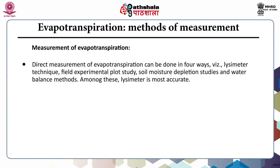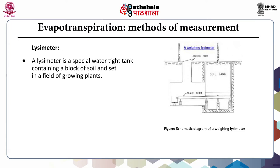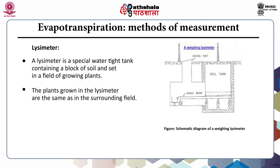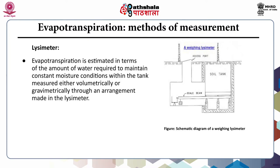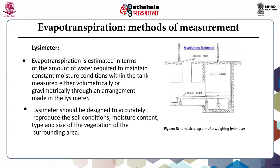The direct measurement of evapotranspiration can be done in four ways: lysimeter technique, field experimental plot study, soil moisture depletion studies, and water balance study. Among these, the lysimeter is the most accurate one. A lysimeter is a special watertight tank containing a block of soil and set in a field of growing plants. The plants grown in the lysimeter are the same as in the surrounding field. Evapotranspiration is estimated in terms of the amount of water required to maintain constant moisture conditions within the tank, measured either volumetrically or gravimetrically. Lysimeters should be designed to accurately reproduce the soil conditions, moisture content, type and size of the vegetation of the surrounding area, and should be buried so that the soil is at the same level inside and outside the container. You can see in this figure the schematic diagram of a weighing lysimeter.